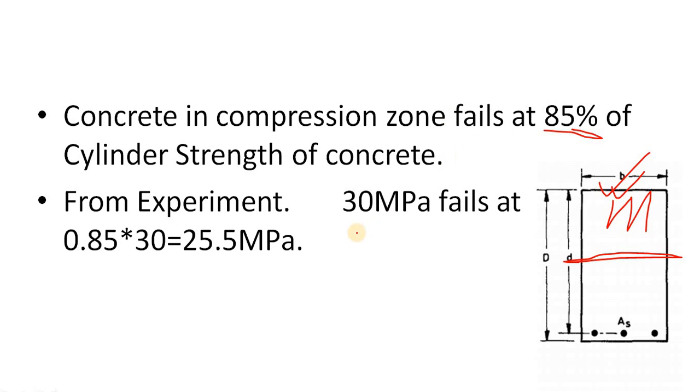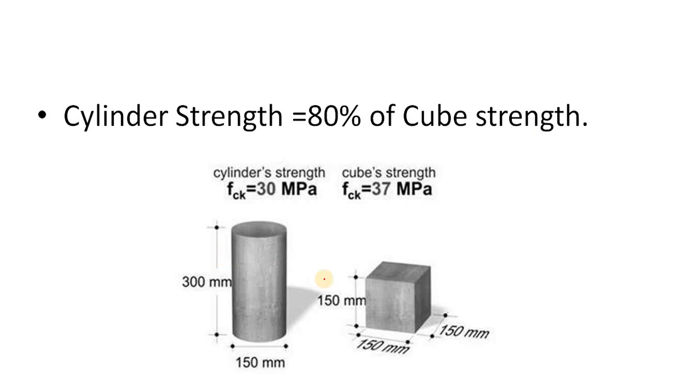So if the cylinder strength is say 30 MPa, from experiment it has been proved that it fails only at 25.5 MPa or at 85% of the cylinder strength. In IS-456, we measure the strength of our concrete in terms of cube strength.